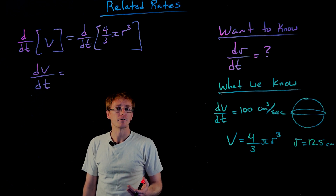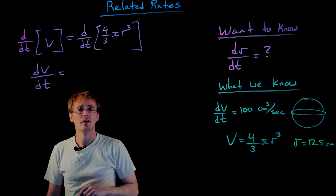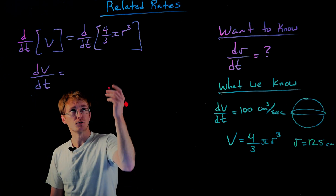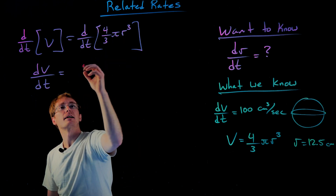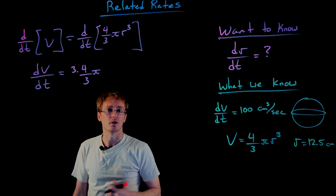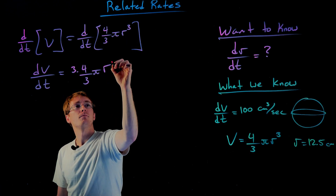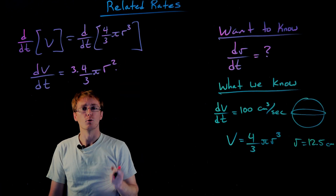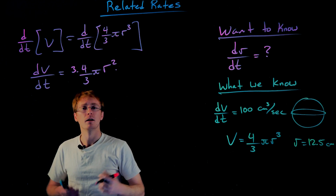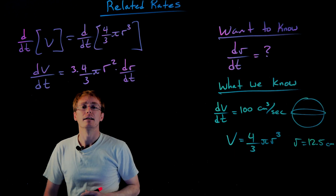For the right-hand side, we proceed more carefully. We're differentiating with respect to t, not r, so we treat r as a function of t and apply the generalized power rule along with the chain rule. We bring the exponent 3 out front as a factor: 3 times (4/3)π, then decrease the exponent of r by one to get r², and finally multiply by the derivative of the inner function, which is dr/dt. So the right-hand side becomes (3 · 4/3)π r² · dr/dt.